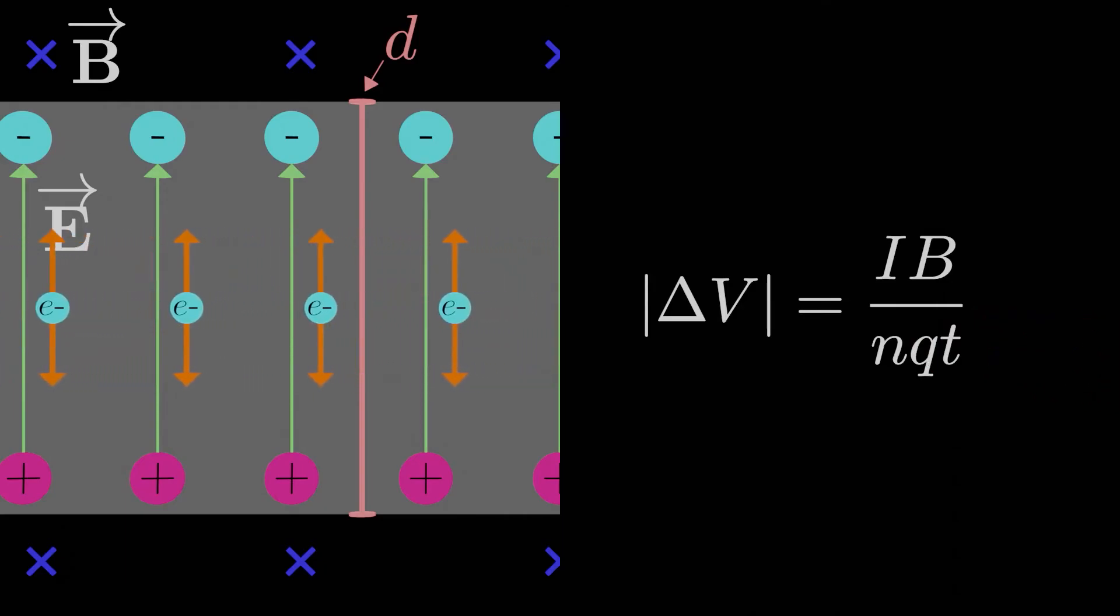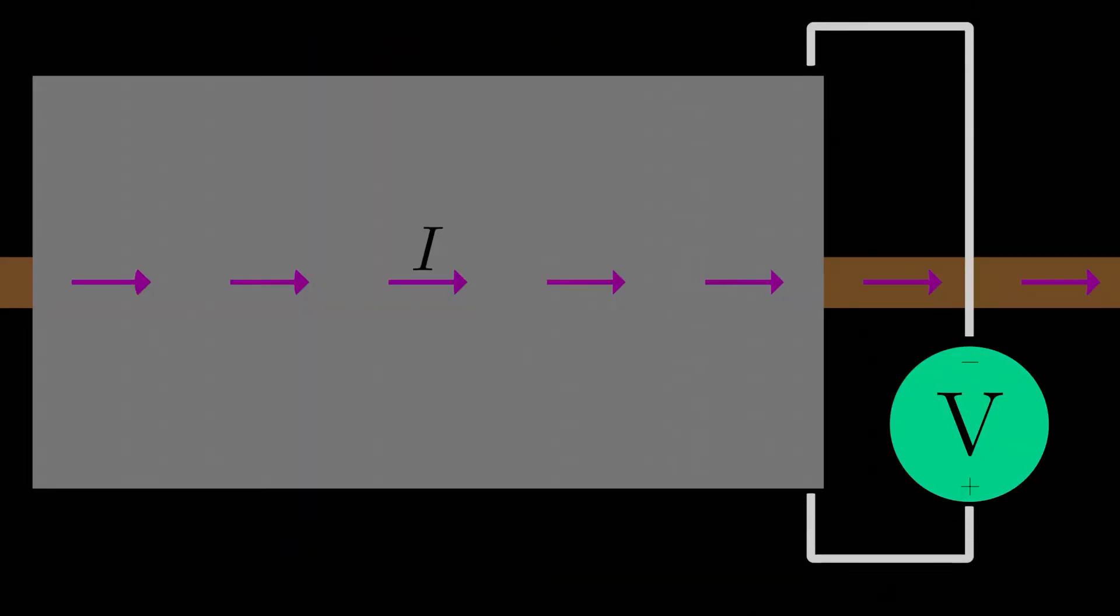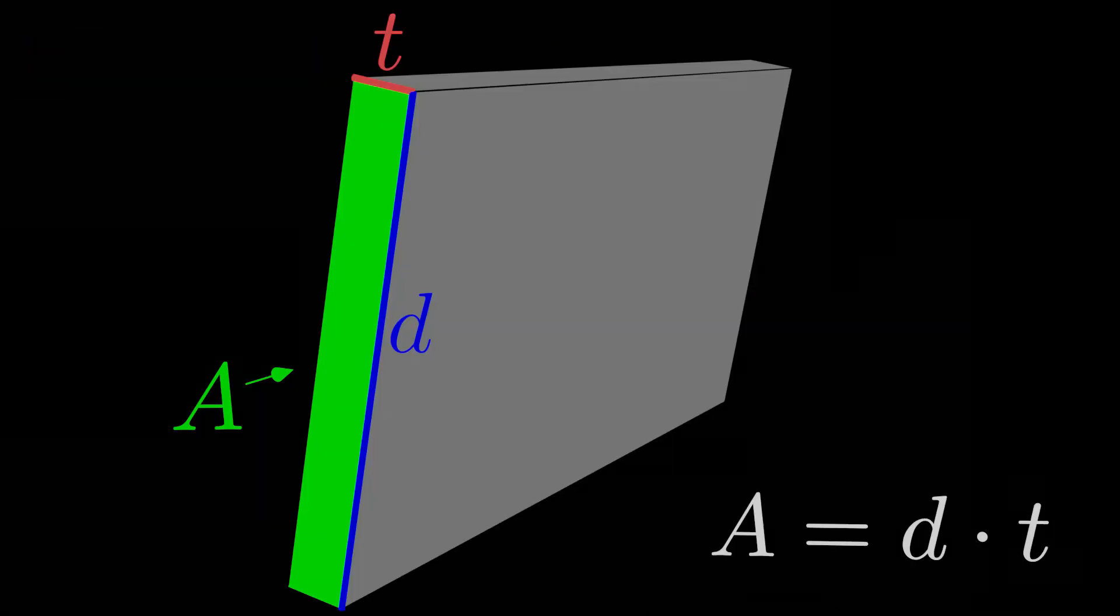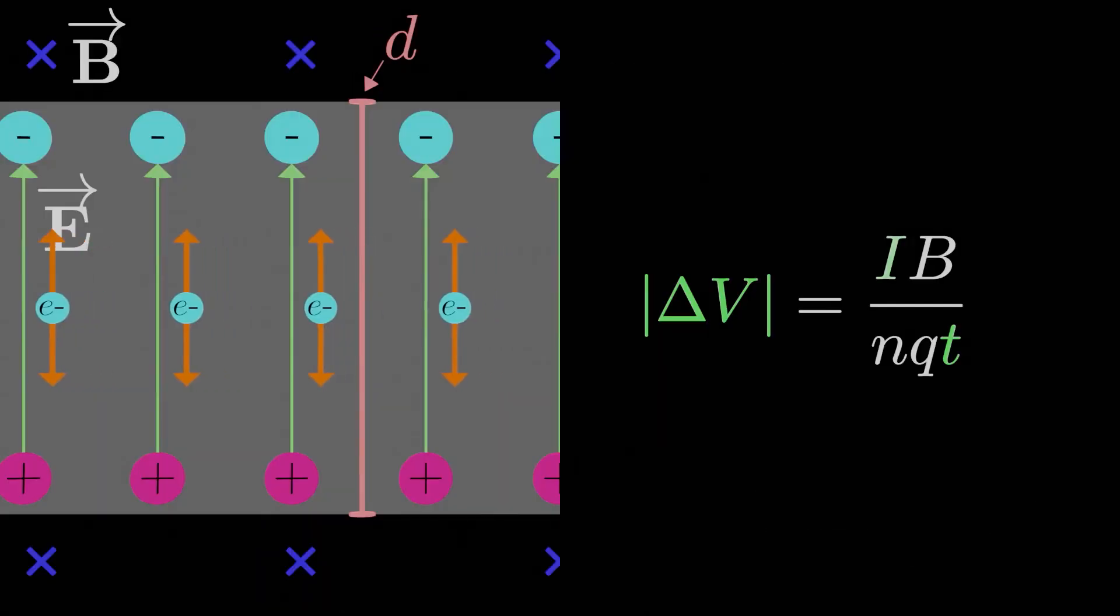Now, what exactly don't we know here? We know the Hall voltage for sure, we can just measure it with a voltmeter. Same with the thickness, we can measure that too. The current we can also easily measure using an ammeter. So if we know the magnetic field, this expression for the Hall voltage gives us an easy way to approximate the value Nq.